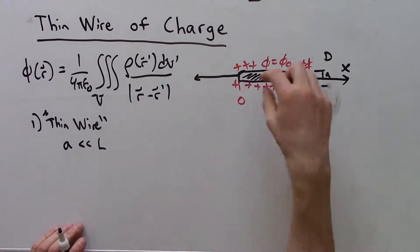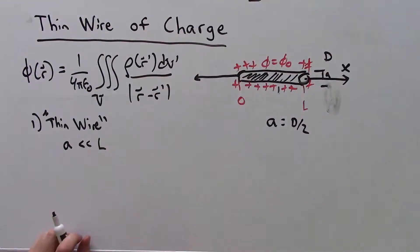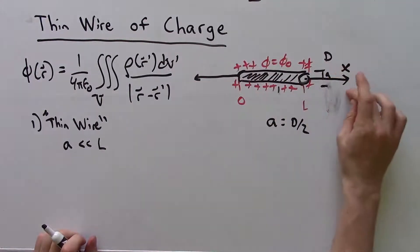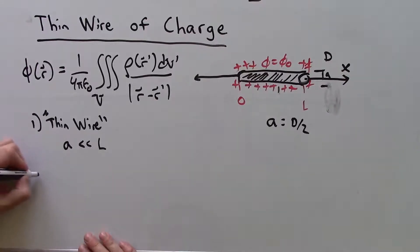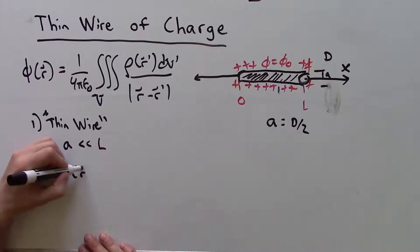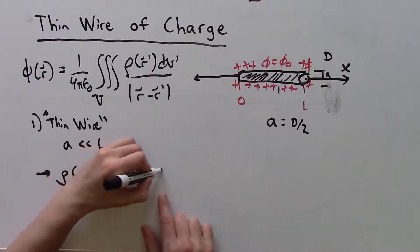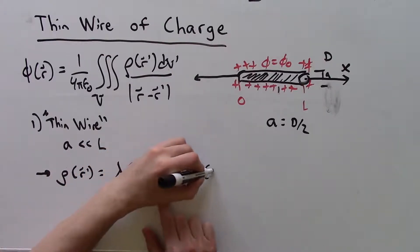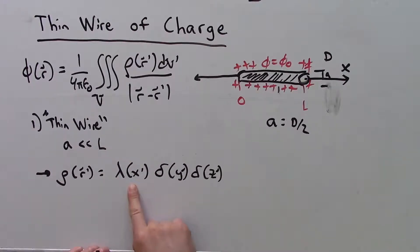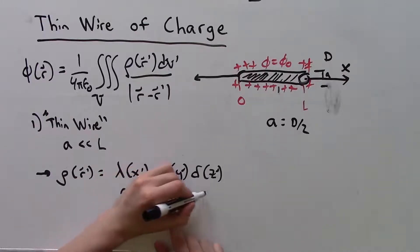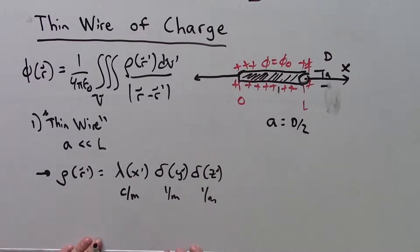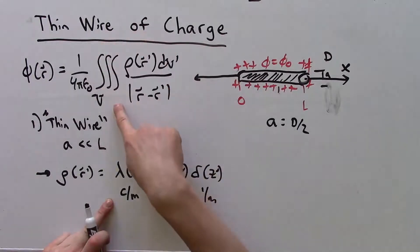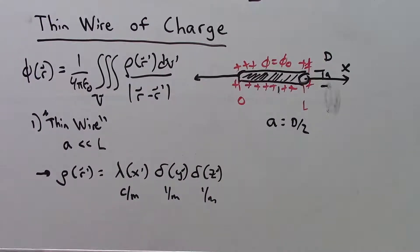Another thing we're going to do is assume all the charge is squished into a tiny linear charge density along the x-axis. So ρ(r') equals λ(x') times δ(y')δ(z'). This is called a linear charge density with units of coulombs per meter. This is handy because this triple integral will simplify into just a single integral.